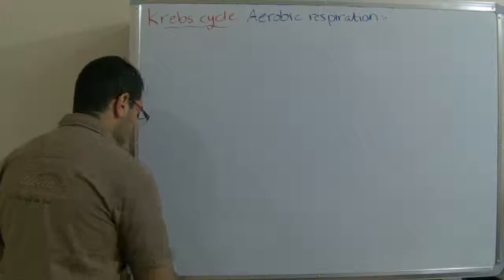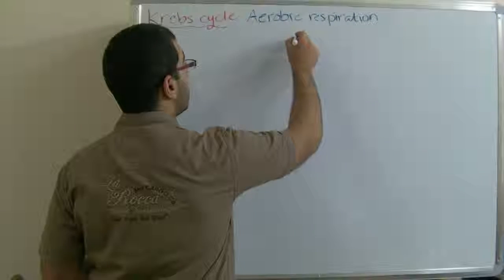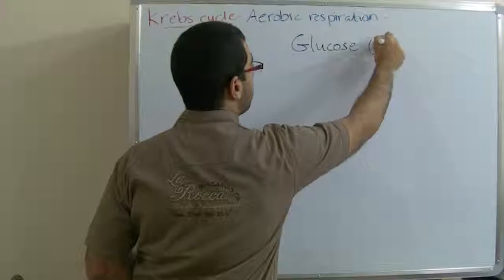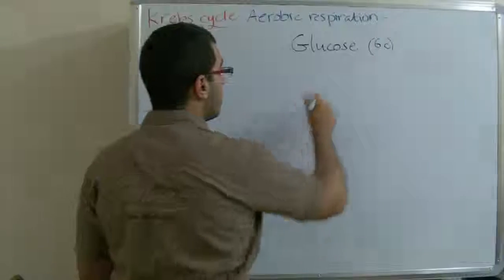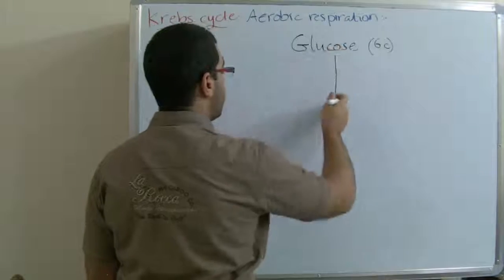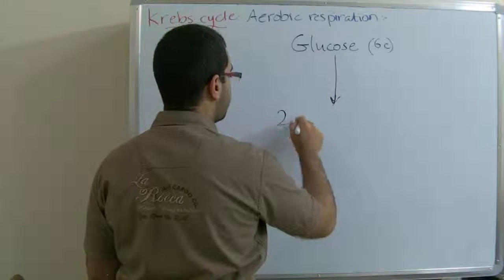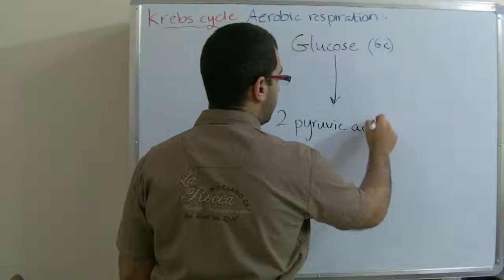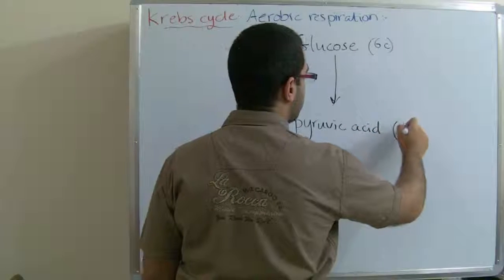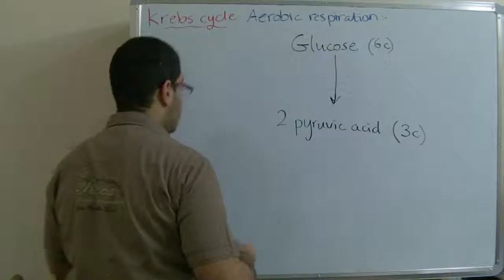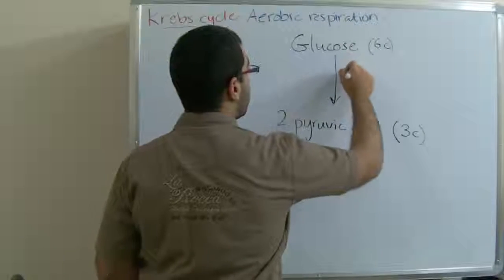In the previous video we stopped at the glucose molecule with the six carbon atoms which is oxidized through the glycolysis into two pyruvic acid molecules each with three carbon atoms.